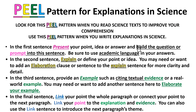I've color-coded the P pink, the Explanation yellow, the Example green, and the Link blue, and I've asked you to highlight paragraphs so that you can recognize this pattern. Look for the PEEL pattern when you read science text to improve your comprehension, and use the PEEL pattern when you write explanations in science. You recognize the PEEL pattern because the first sentence presents a point or an idea — you often take this sentence and write it from the prompt. P can also stand for Present from the Prompt. Be sure to use academic language.